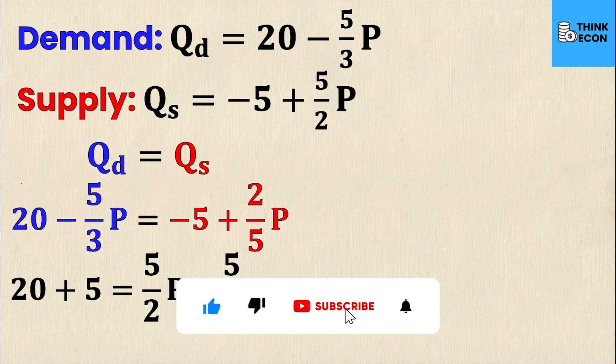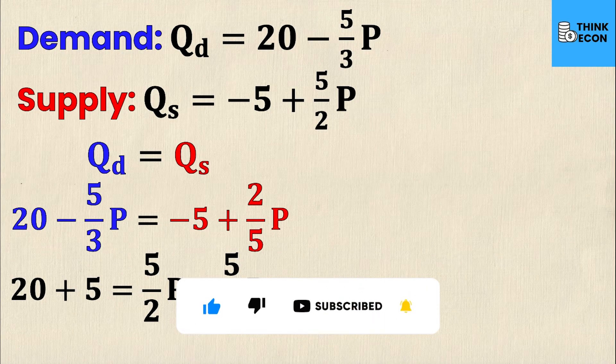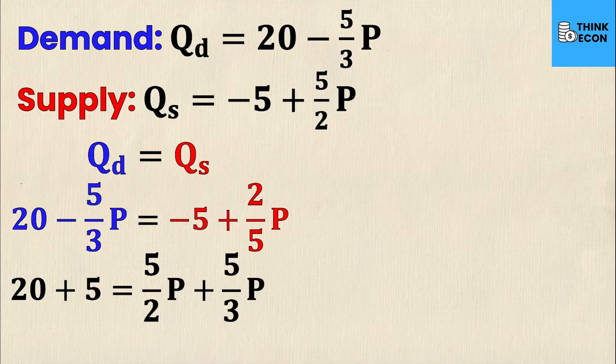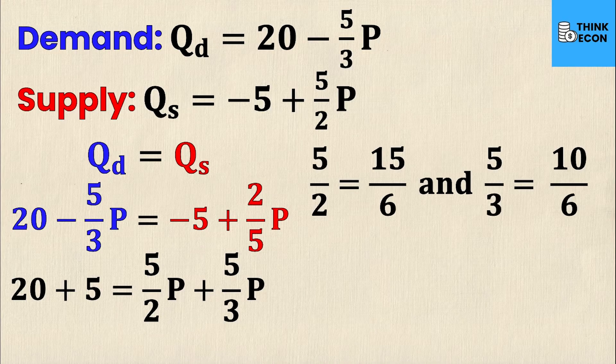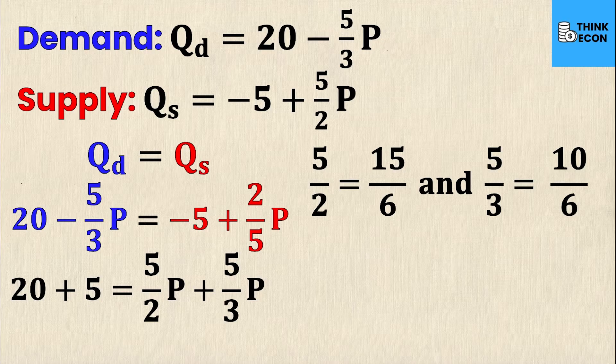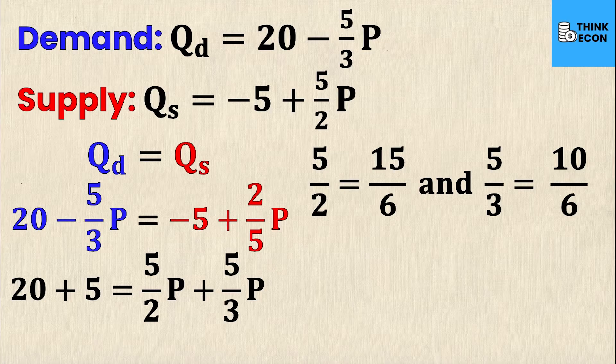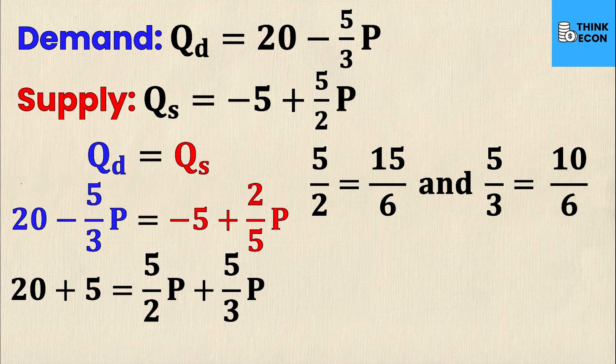So I need to rewrite these two fractions with denominators of 6 so I can actually add them together. I have 5 over 2 rewritten as 15 over 6, and 5 over 3 rewritten as 10 over 6. These are equivalent fractions, they're the exact same fraction.